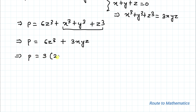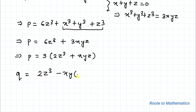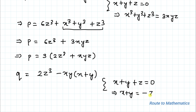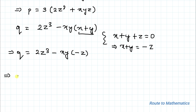Now let's simplify the Q part. We have Q = 2z³ − xy(x + y). From equation one, x + y + z = 0, so we can write x + y = −z. Substituting the value of x + y as −z, this implies Q = 2z³ − xy(−z), so Q = 2z³ + xyz.